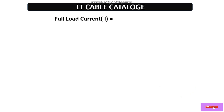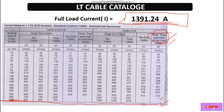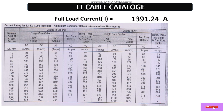Now we have calculated the full load current. We need to select a cable from the catalog for 1391.24 ampere. Looking at the cable catalog, this much current cannot be found in a single cable. The maximum cable size here is 1000 square mm, and looking at the 3.5 core or 4 core cables laid in air or in ground, we can only find up to 703–704 ampere capacity. So we need to increase the number of cable runs.